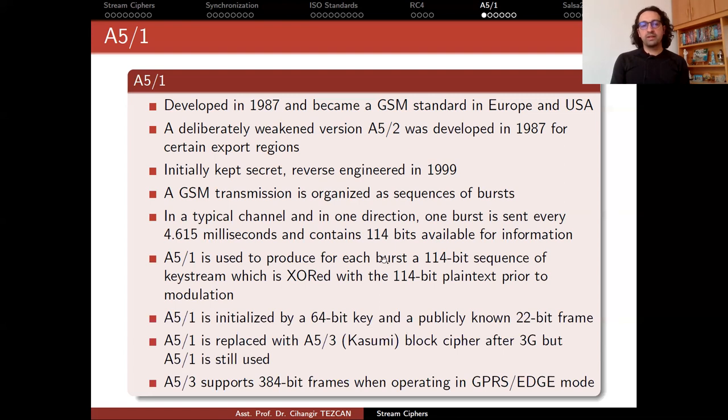A5/3 supports 384 bit frames when operating in GPRS edge mode. But of course, when you move on to 4G, 4.5G and 5G, we have better speeds. But those are beyond the scope of this lecture.